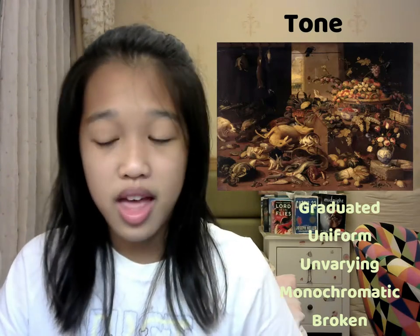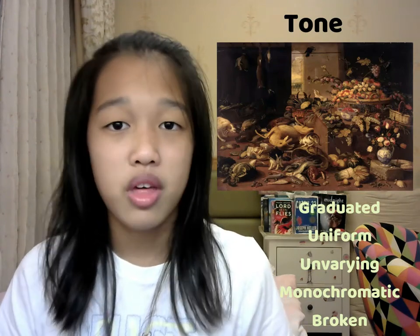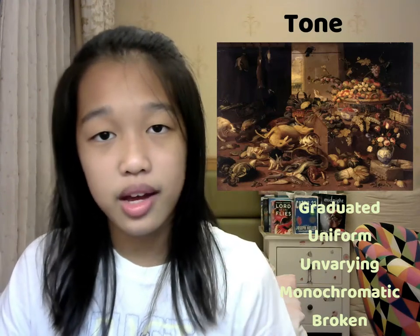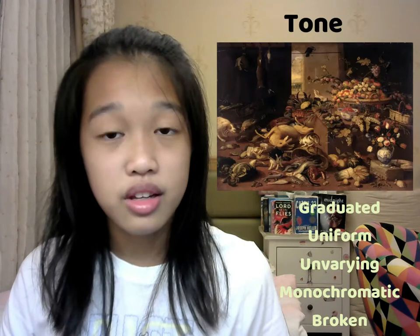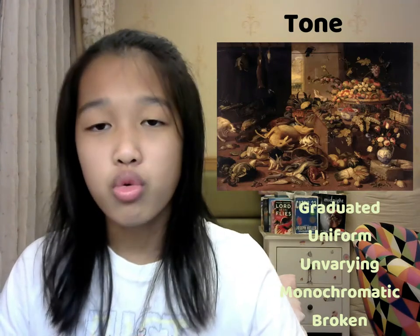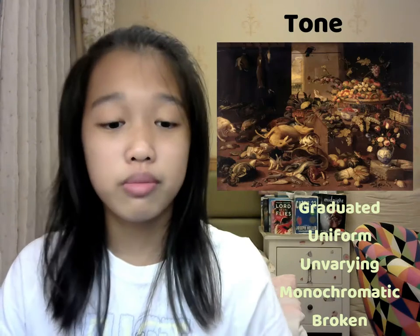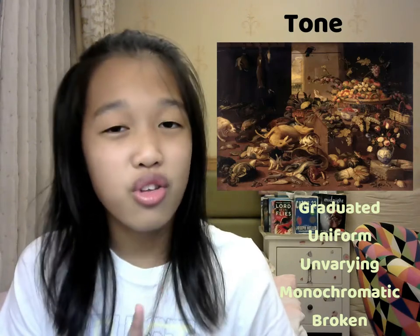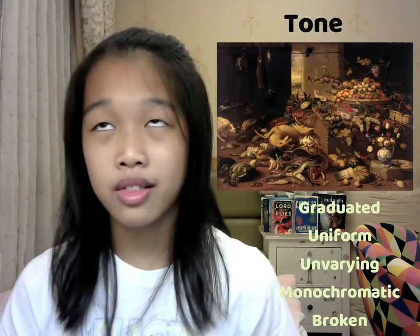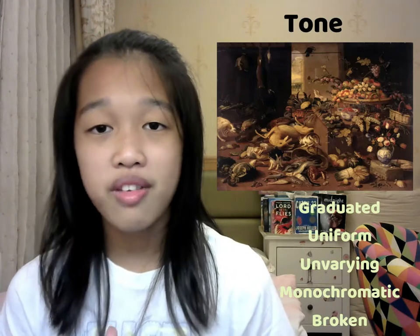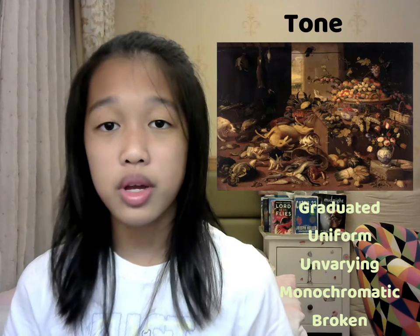The tone is smooth and doesn't vary from rocky to smooth or glossy to smooth — it is unvarying. It is also monochromatic, meaning it doesn't have a bunch of colors; it is smooth, plain, and normal. The tone is also described as broken. This painting is broken because of the way it makes you feel and the way the artist drew it — the objects are still life and it's broken.